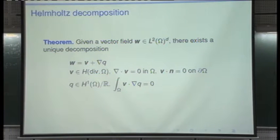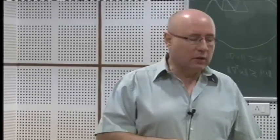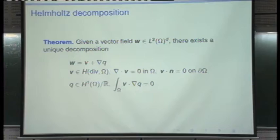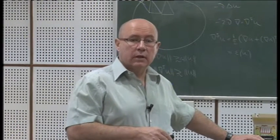Now we move to the abstract Babuška-Brezzi theorem, which introduces the inf-sup condition. Let B be a bilinear form in general spaces, L a linear form, and we consider the abstract variational problem. If B is continuous (bounded), L is continuous, and the inf-sup condition holds, then the problem has a unique solution — and these are necessary and sufficient conditions. Remember: coercivity, which is much stronger than the inf-sup condition, is only sufficient but not necessary. The inf-sup condition is both necessary and sufficient for well-posedness.